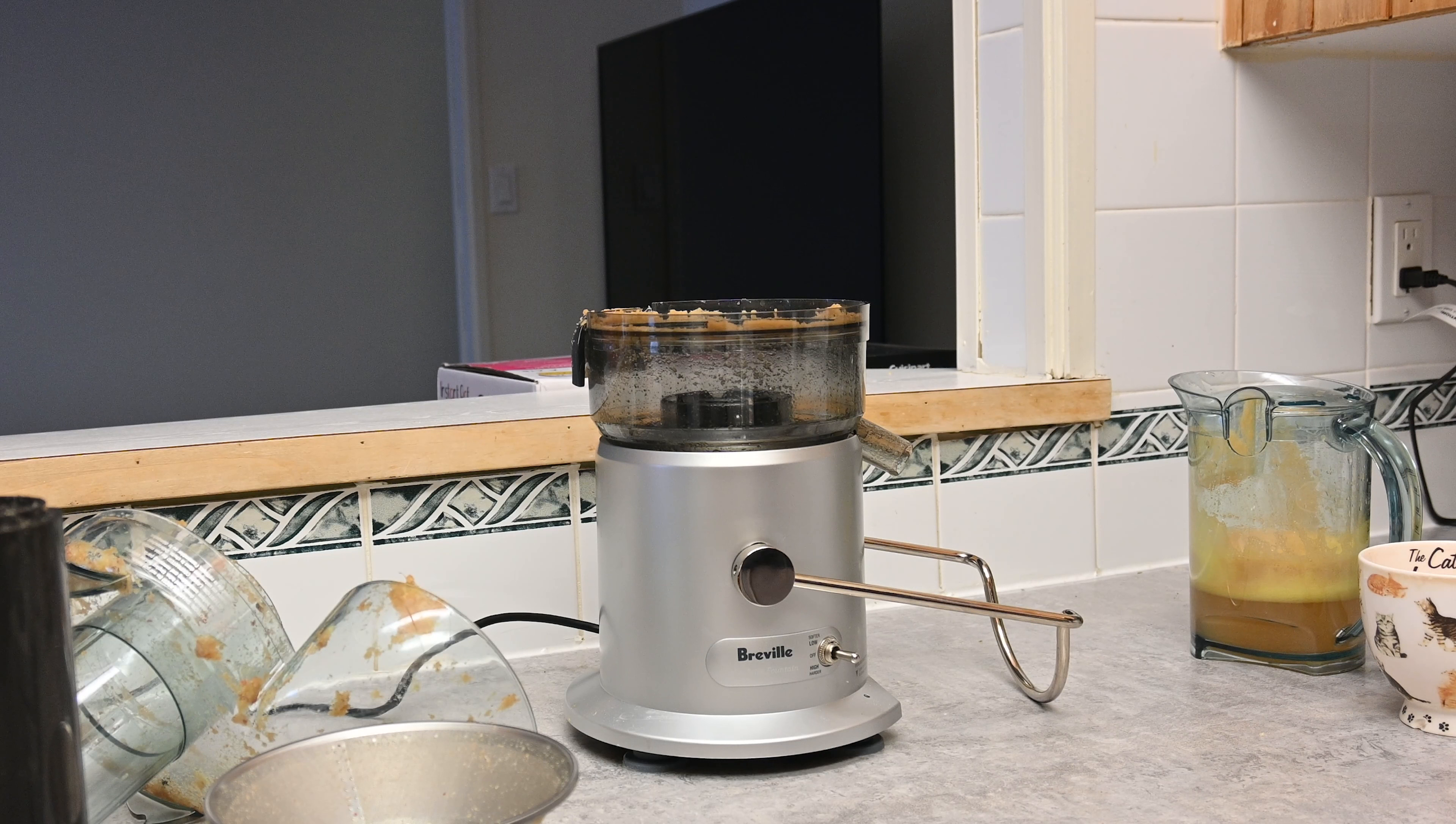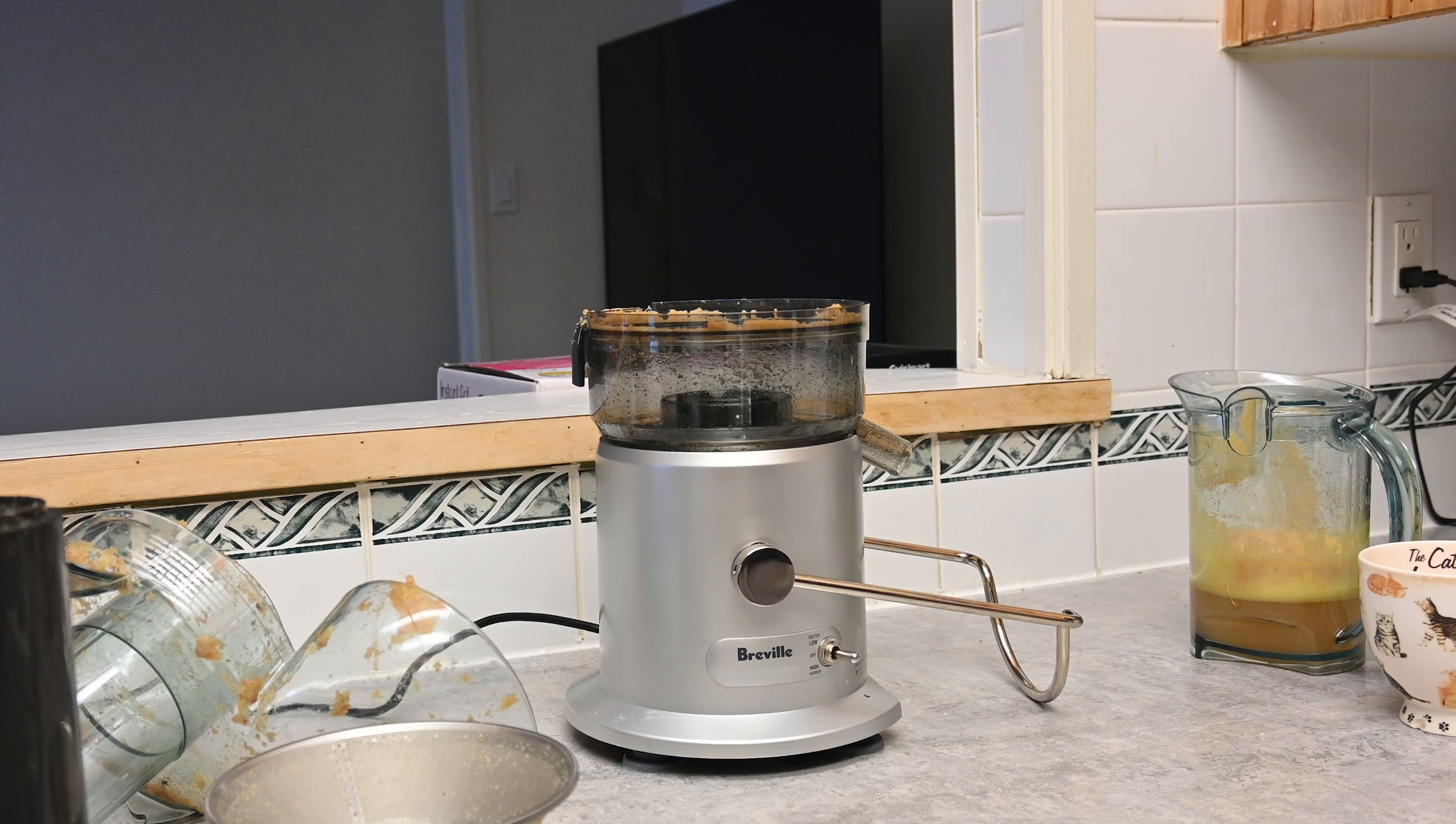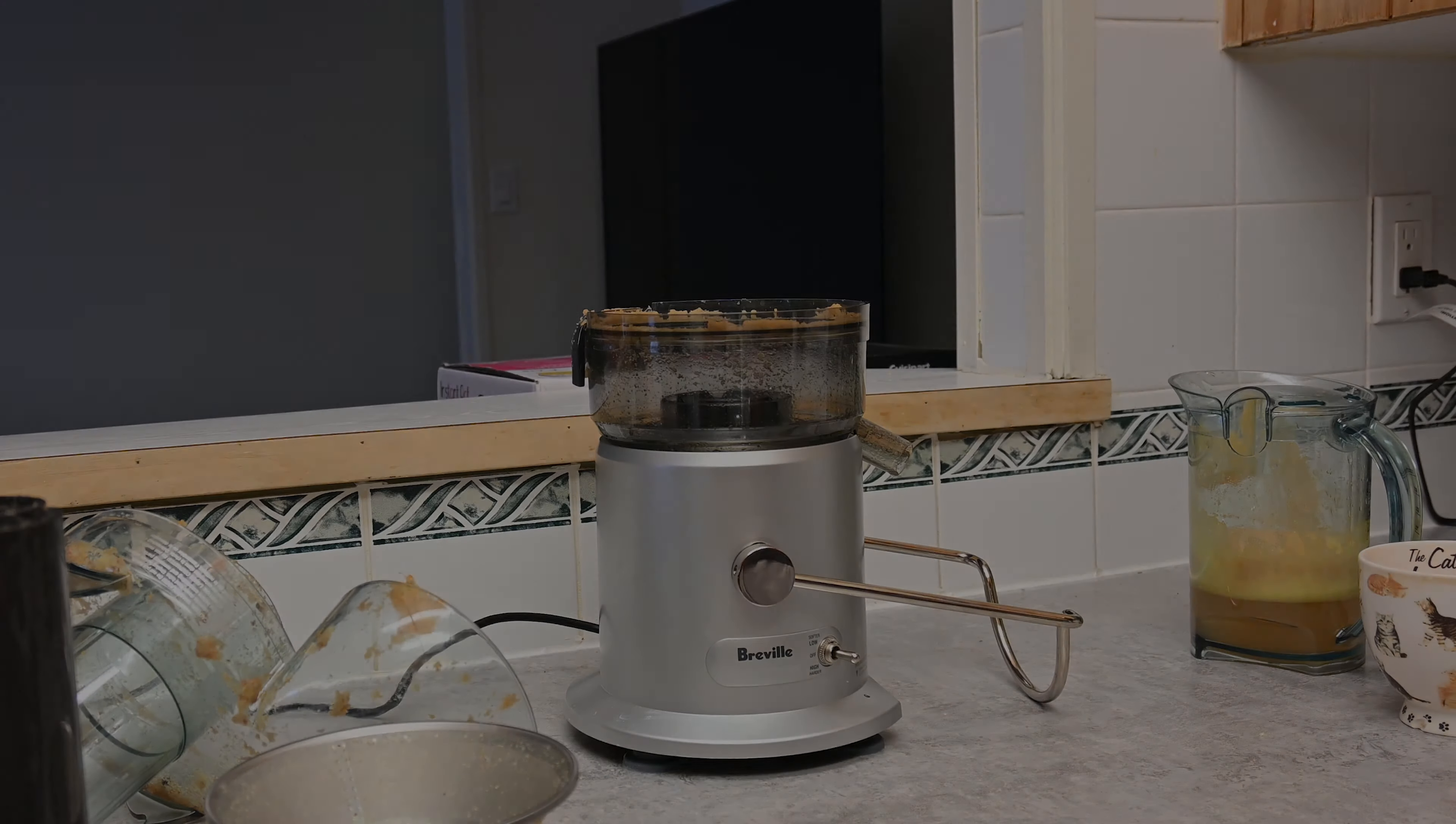And then of course up here is where we put the fruit into, so I'll show you that as well. Now right now you can see it's in the locked position, but as soon as we pop this down we can start to take it apart, which I will show you the process I do to clean it when we're done making the actual juice and testing it. But for now we'll have it in the locked position. When it's unlocked it will not turn on.